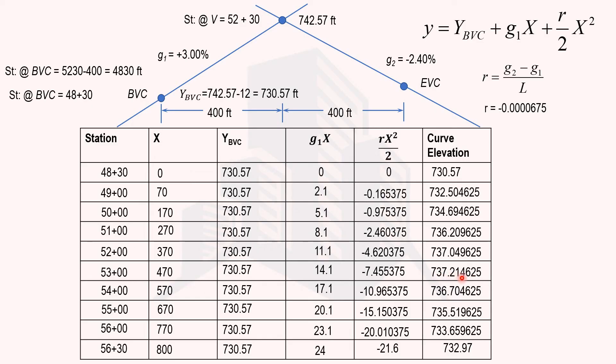This is how the calculation is done when setting out a vertical curve. Because this is a parabolic curve, we simply substitute the x value for any desired point into the elevation equation to get the curve elevation there. This is all for this video — I hope you now understand how to set out a vertical curve. Thank you for watching.